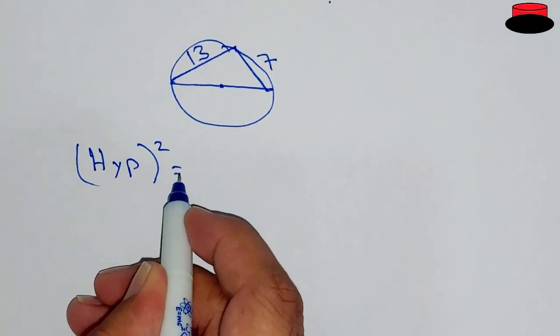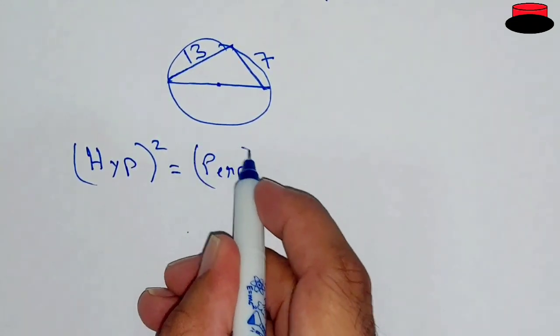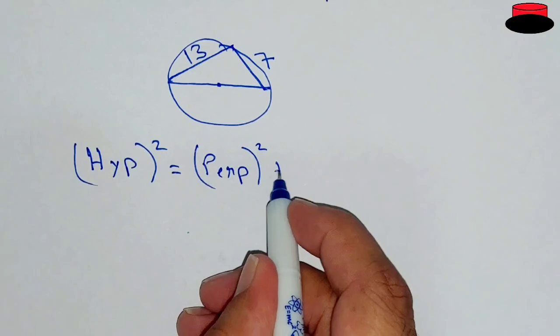We know that hypotenuse squared is equal to perpendicular squared plus base squared.